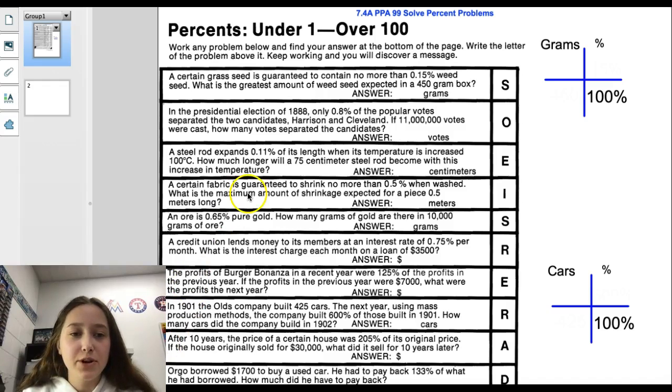So the first one we're going to do is number 1. It says a certain grass seed is guaranteed to contain no more than 0.15% weed seed. What is the greatest amount of weed seed expected in a 450 gram box? So first thing you need to do is line up your percents. That's going to go right above the 100%. So you have 0.15%, 100%. Next you have to put in your 450 gram box.